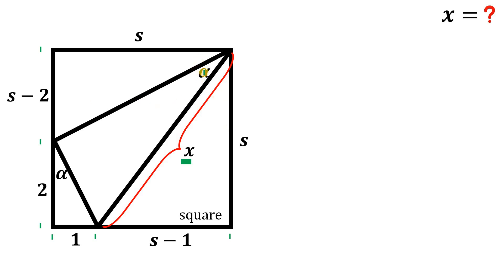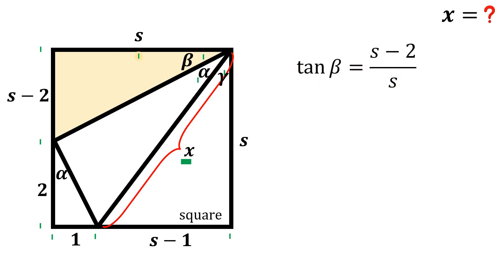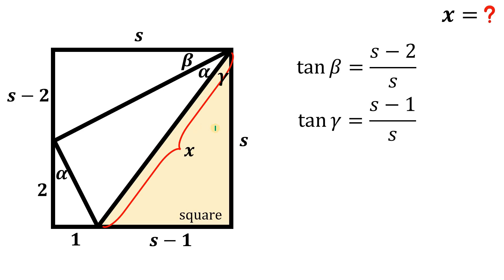This angle is alpha. Let's call this angle beta and this angle gamma. Focusing on this right triangle, we have the opposite side and the adjacent side, so we can get tangent of beta. Tangent of beta simply equals s minus 2 over s — the opposite side over the adjacent side. On the other right triangle, tangent of gamma simply equals s minus 1 over s.